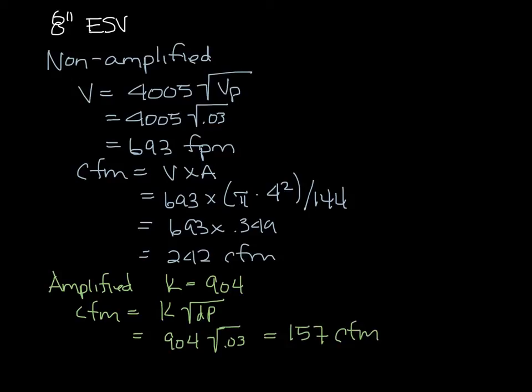So without the amplified signal, you could read down to 242 CFM versus 157 CFM for the amplified signal. So we're often asked how low our VAV boxes can go, but the answer depends on a couple things.